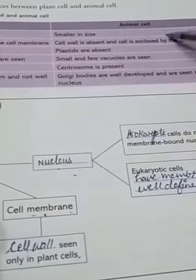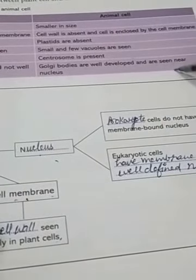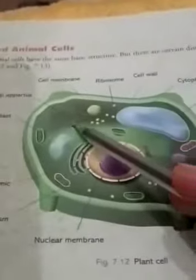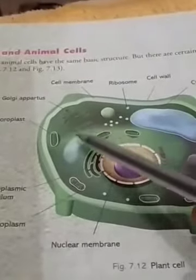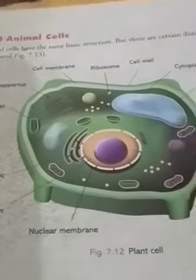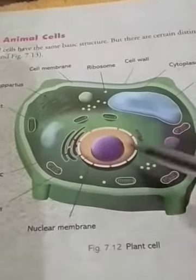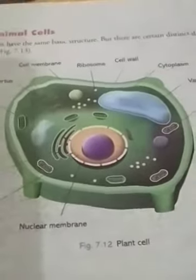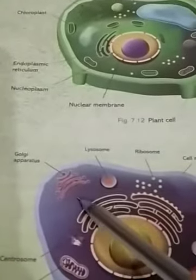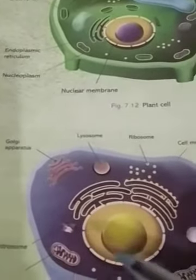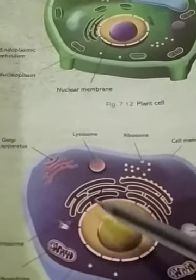The next difference: in the plant cell, Golgi bodies are scattered in the cytoplasm and are not well formed. While in the animal cell, the Golgi apparatus is well defined and is seen near the nucleus. Here in the plant cell, the Golgi apparatus is not well defined and is scattered anywhere in the cytoplasm. In the animal cell, you can see easily — this is a well-defined Golgi apparatus, a membrane-bound organelle located near the nucleus.